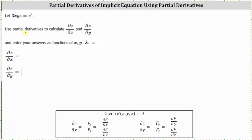We are given 3xyz equals e to the power of z. And we're asked to use partial derivatives to calculate the partial of z with respect to x and the partial of z with respect to y.